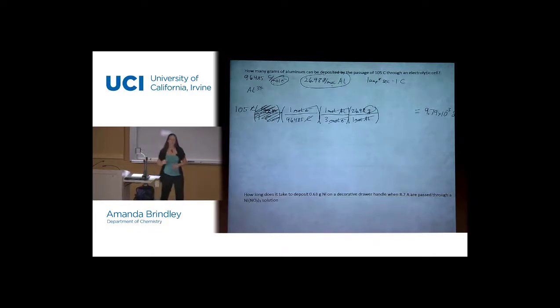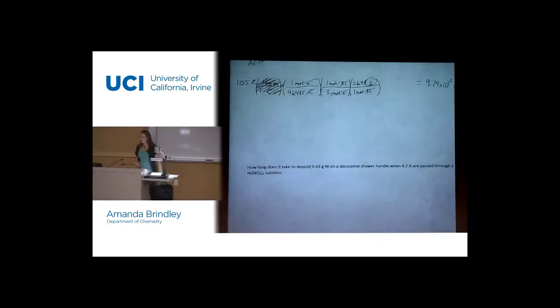The next one that we're going to do is going to show us how to use amps in there as well. Because in this case, I just said, okay, I have a certain number of coulombs. Let's see how many grams I get. But sometimes you're going to have a system where you can only run it at a certain amount of amps. Whatever power supply you have is going to apply this amount of amp. And you need to just be able to run it for a certain amount of time. The second one is actually a much more realistic version of the calculation that you would do. Where you have a system, you know how many amps it puts in, you know what you're plating. And you just need to see, okay, I'm going to set this up to go. How long should I set the timer for? So how long does it take to deposit 0.63 grams of nickel on a decorative drawer handle when 8.7 amps are passed through a nickel nitrate solution?